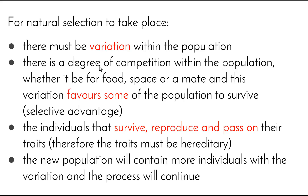There needs to be a degree of competition within the population — whether it's for food, space, or a reproducing mate — and this variation favors some of the population to survive. We refer to this as a selective advantage. Some organisms have an advantage over others, and those that do survive will reproduce and pass on these traits to their offspring.